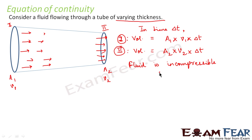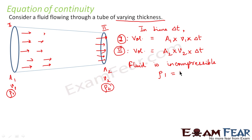So if the fluid is incompressible, the density of the fluid will remain the same, because the volume does not get reduced and the mass remains the same. Since density is mass divided by volume, density will remain the same. So if the density is equal, then the mass will also be equal at both ends.